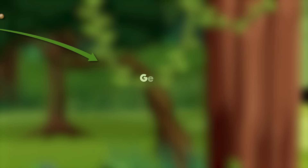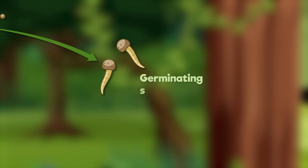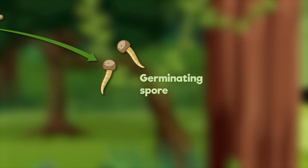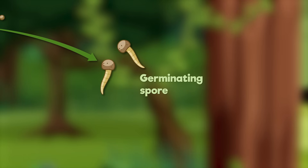Step 2: Germinating Spore. When a spore lands in a damp and shady spot, it begins to grow. The spore opens up and starts turning into a small, green plant.